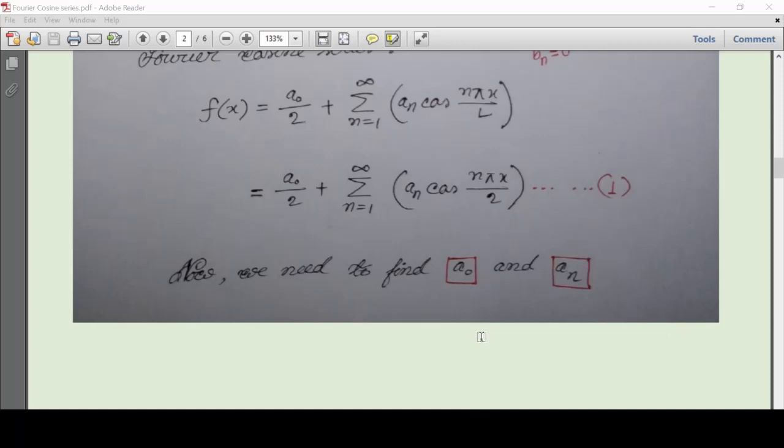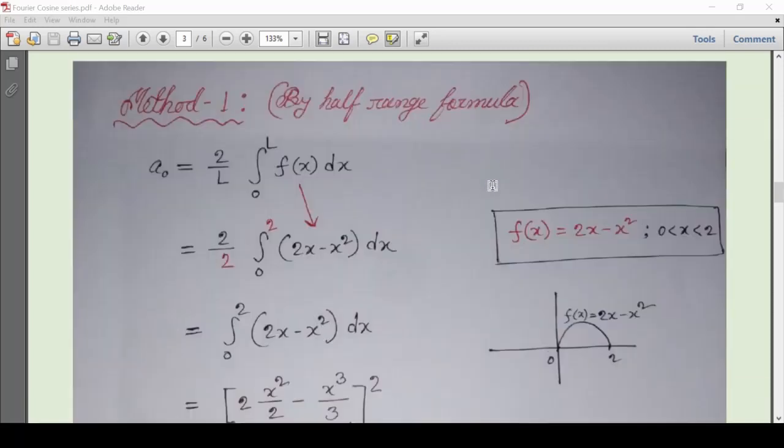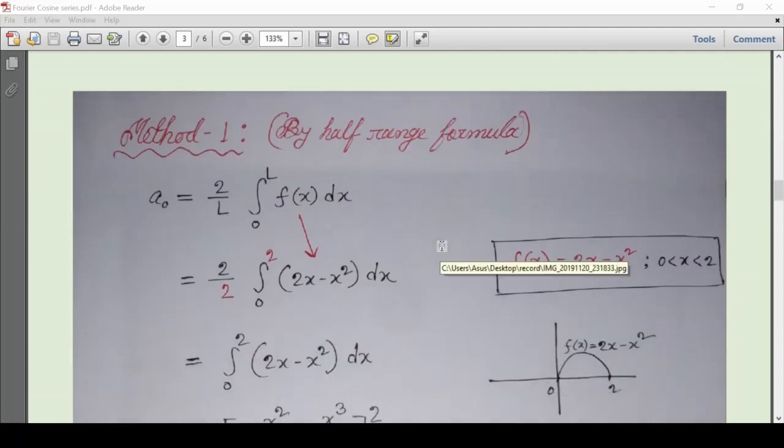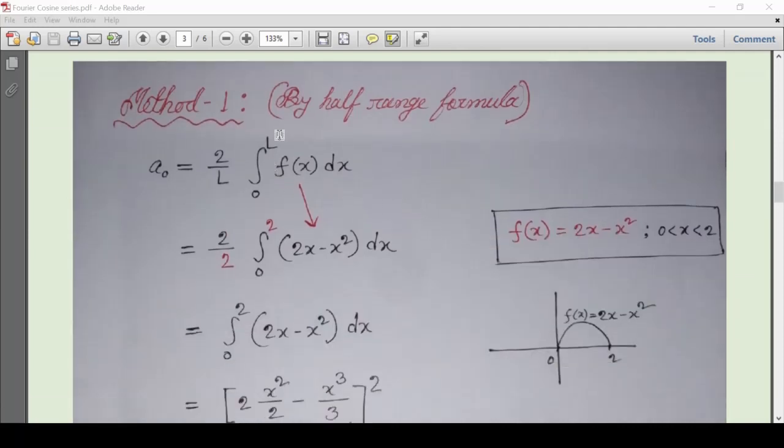Actually I was wrong at that time. I still restate that both full-range and half-range will give us the same result. But somehow in last class, I was totally unable to give you the clear concept, and I am really very sorry for that. Here I am going to remove your confusion. But at first, let's check the correct result of a_0 by using the half-range formula.